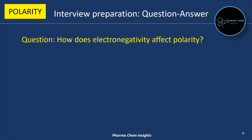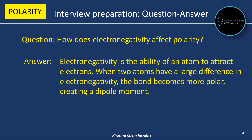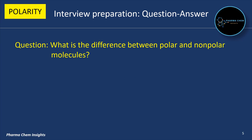Next question: how does electronegativity affect polarity? Answer: electronegativity is the ability of an atom to attract electrons. When two atoms have a large difference in electronegativity, the bond becomes more polar, creating a dipole moment.